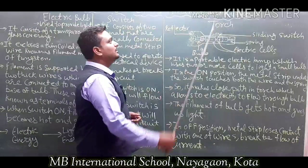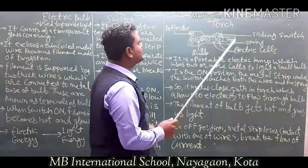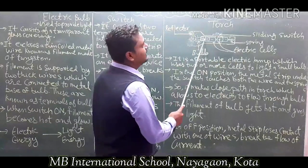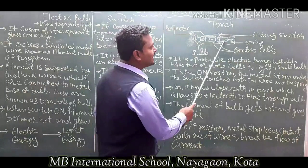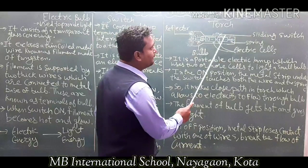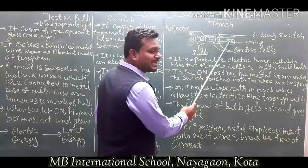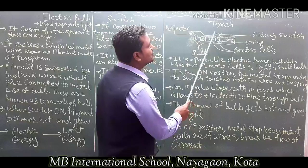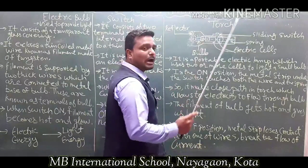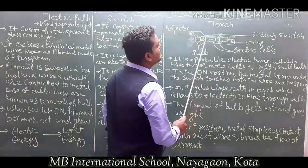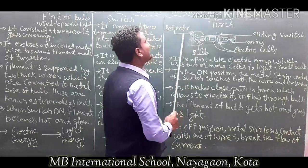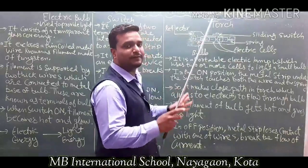Now let's talk about the last topic: torch. In this torch diagram, there are two cells. The electric cells are interconnected, and the last cell is connected with a spring. The torch has a sliding switch which slides in the outer case. The torch also has a bulb with a reflector, which reflects the light.